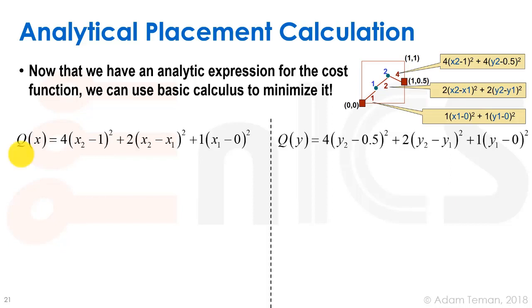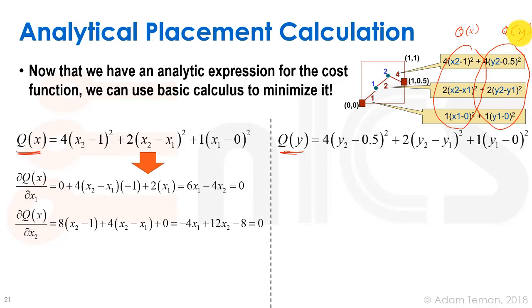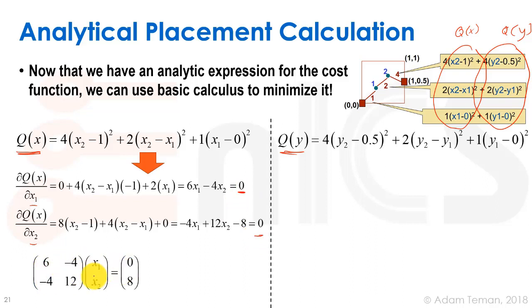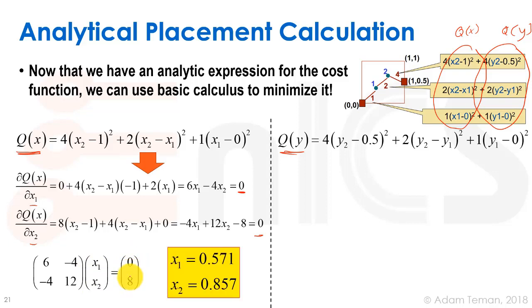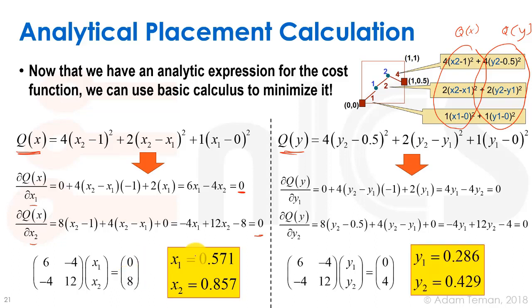Using basic calculus, we write Q(x) as the x part and Q(y) as the y part of the quadratic wire length. We perform partial differentiation with respect to x1 and x2, equate to zero, and this gives us a linear system. We get the matrix equation: [6, -4; -4, 12] × [x1; x2] = [0; 8]. The same procedure is applied to the y part, giving two separate linear systems to solve.